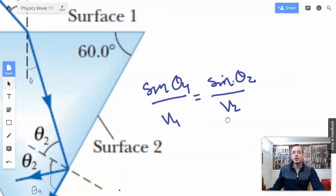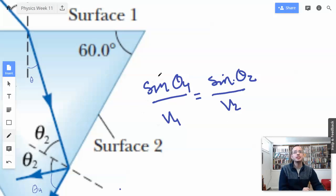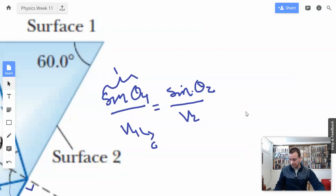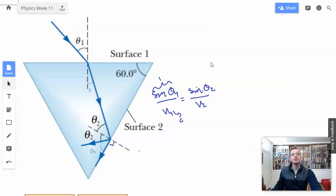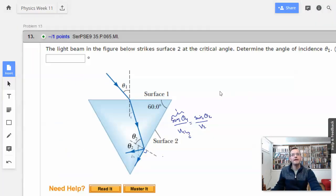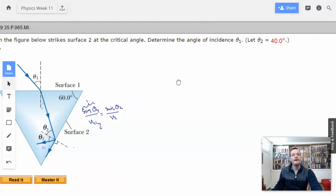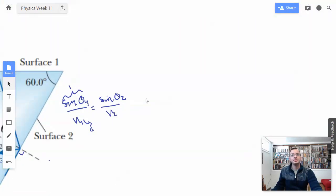And we know that sine of theta 4, since theta 4 this guy right here is 90 degrees, this guy's going to be 1. V4 is just going to be C because that's the speed of light. Then we know that V2, we don't know what V2 is. That's the key part here. I think that's one of the tricks. We need to find what V2 is.